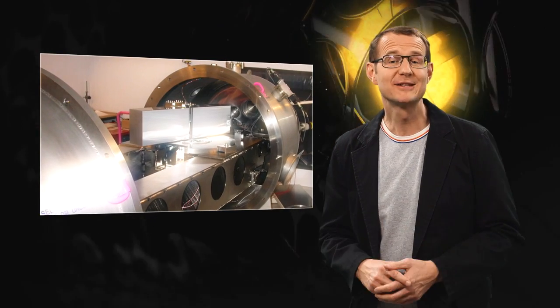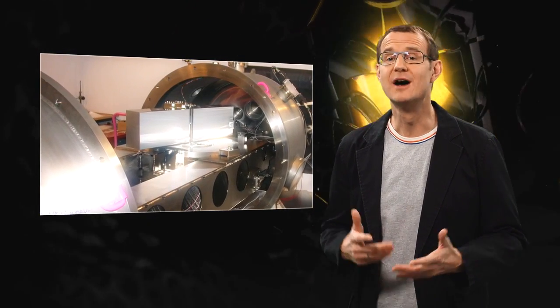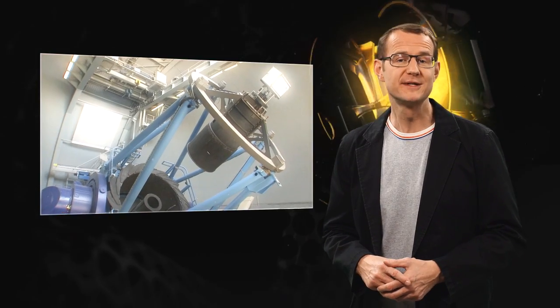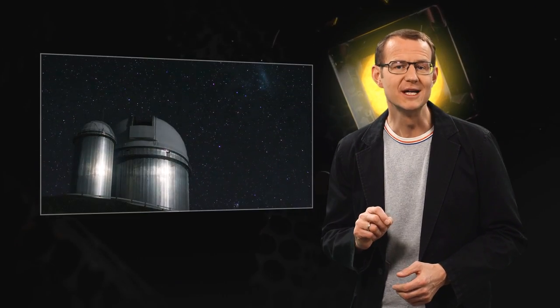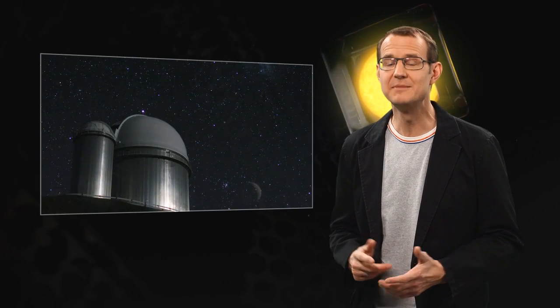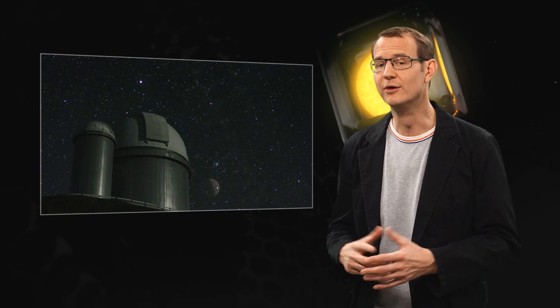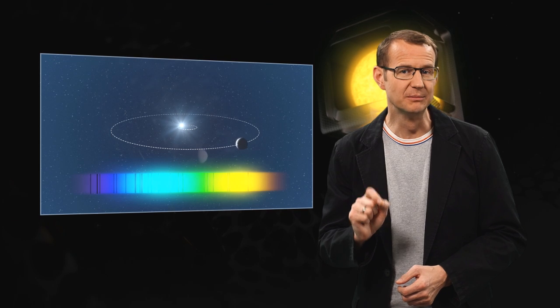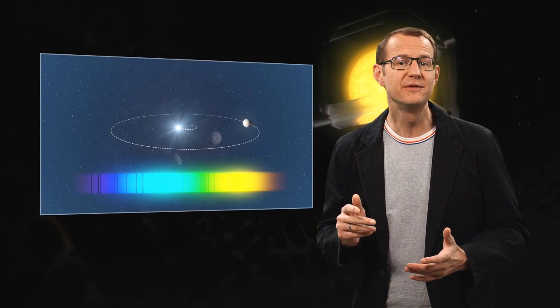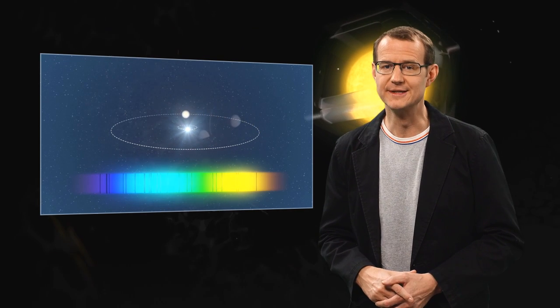To find the new exoplanets, the astronomers used the HARPS instrument on the 3.6-metre telescope at ESO's La Silla Observatory. They carefully monitored 88 selected stars in Messier 67 for a number of years. That allowed them to look for the tiny telltale motions of the stars that reveal the presence of orbiting planets.